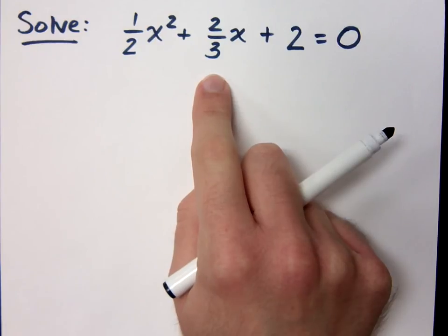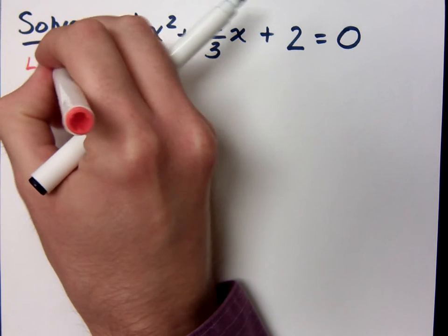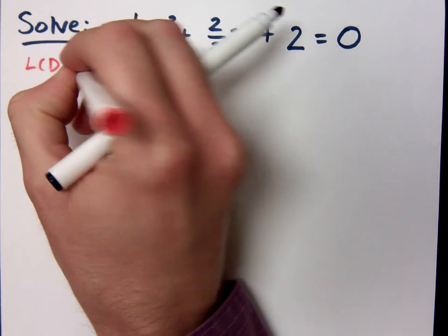And what we need to find is, that's right, we need the least common denominator. So the LCD for everything here is 6.